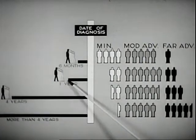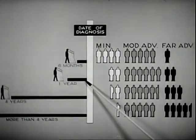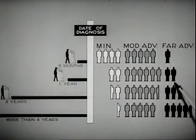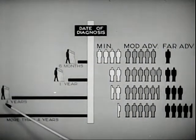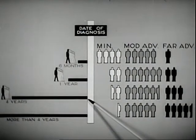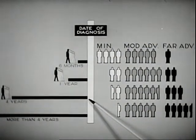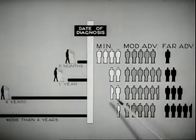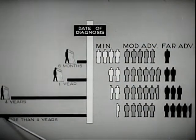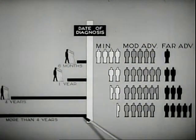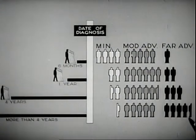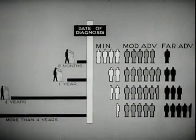In another group where there was a delay of six to twelve months in diagnosis, the distribution worsened. A third group suffered a delay of one to four years, and only fifteen percent were in the minimal stage. The group in whom a definite diagnosis was made four or more years after the appearance of the first symptom fared badly — forty-five percent were in the far advanced stage.